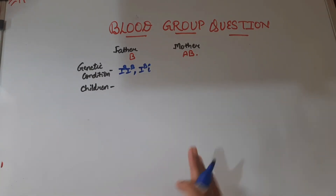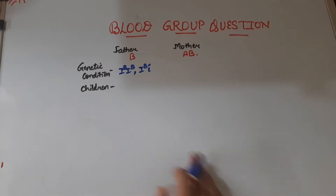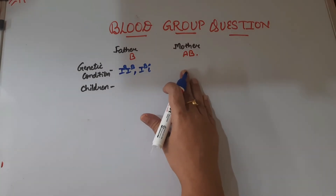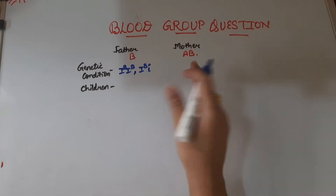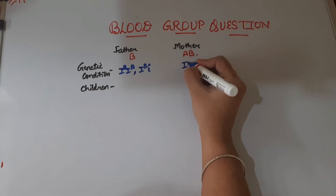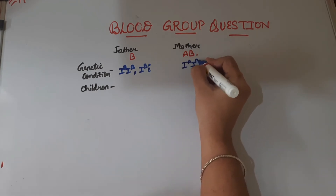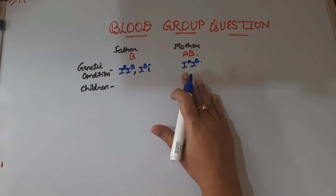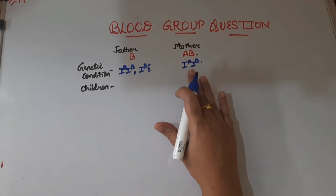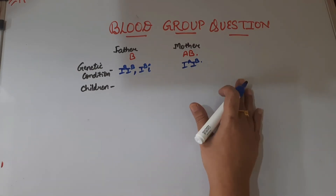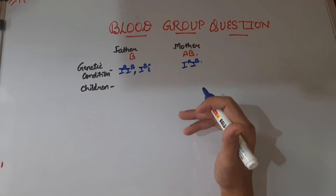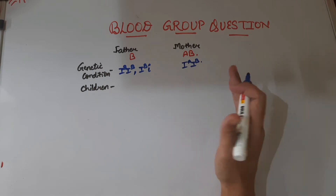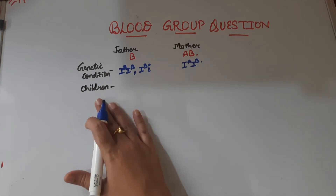What about the mother? In the case of a person belonging to blood group AB, there is only one genetic condition — a co-dominant condition — and that is IA and IB. There is no other possibility for the genetic condition of a person who has blood group AB.